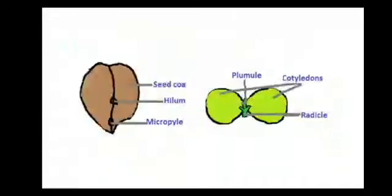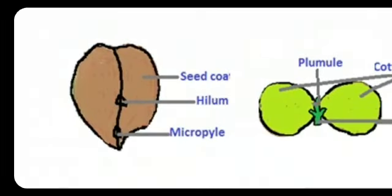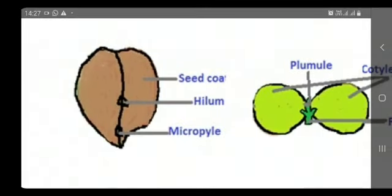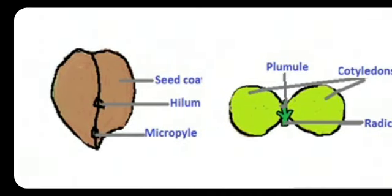We will study this in a diagram. You can see the diagram — this is a gram seed. The main and first part is seed coat.